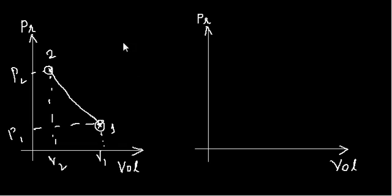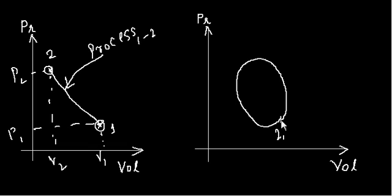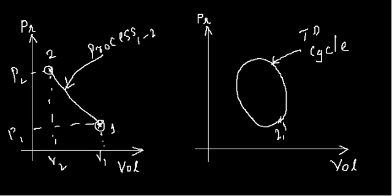Independent of the path of the process, the properties will have defined values at the start and end states. We call this process one-two. A sequence of processes where we start and end at the same point is called a thermodynamic cycle — you go all the way around and come back to your original point. The properties will have the same values at the beginning and end of that cycle.